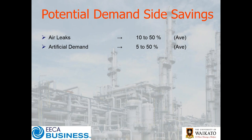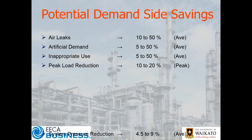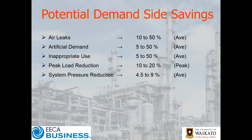Artificial demand — we'll define that shortly — once again five to around 50% savings quite readily achievable. The mix depends largely on the end use of air and the nature of the system. Inappropriate use — we'll differentiate between those two shortly. We have peak load reduction: can the peaks be managed other ways as opposed to just sizing a bigger compressor? And we have system pressure reduction, which we'll discuss towards the end. That four-and-a-half to nine percent is typically what you'll get in terms of the power consumption of the compressor.